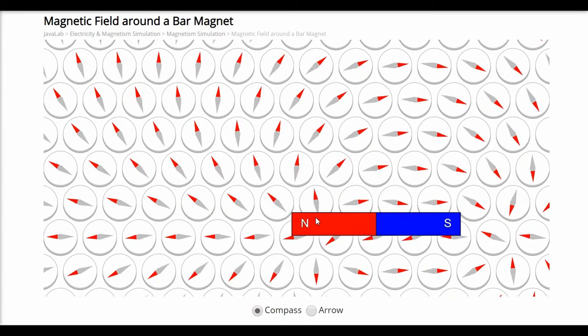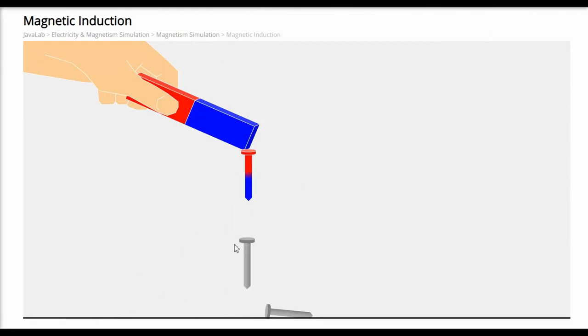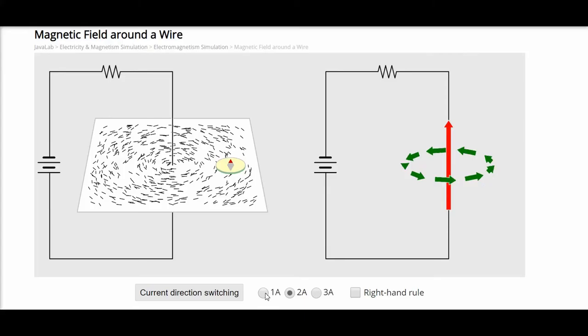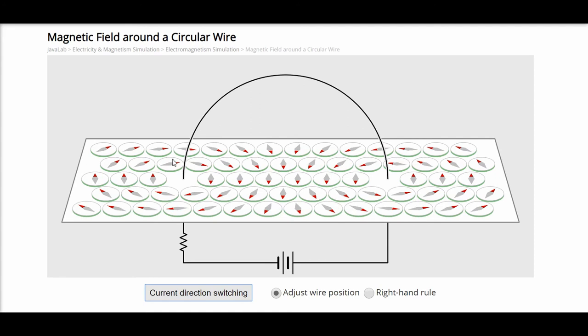Magnetic field around a bar magnet and induced magnetism can be tried out with this simulation. Magnetic effect of electric current in a wire, loop, and field around an electromagnet can be tried out here as well.